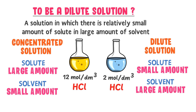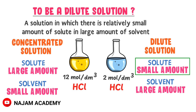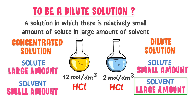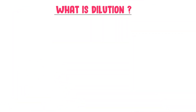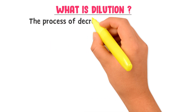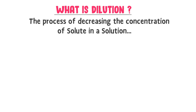Remember that a solution is only considered a Dilute Solution if it contains a comparatively small amount of solute and a large amount of solvent. As a bonus concept, the process of decreasing the concentration or amount of solute in a solution is called Dilution.